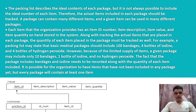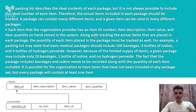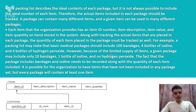The packing list describes the ideal content of each package. Each item that the organization provides has an item ID number, item description, value, and item quantity — all tracked. Along with tracking the actual items placed in each package, the quantity of each item placed in the package must also be tracked. Now Sagar Malik will show the ER diagrams.